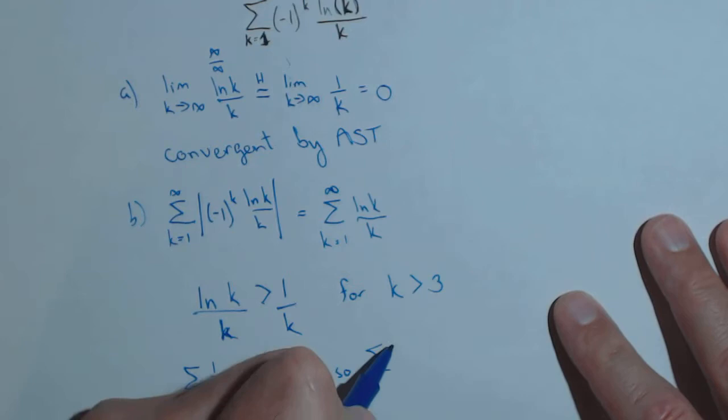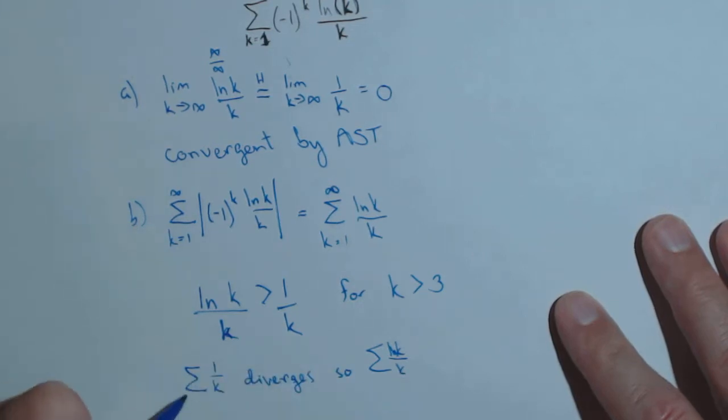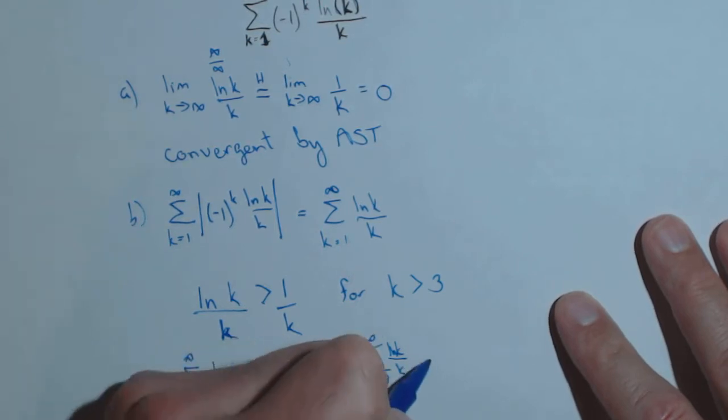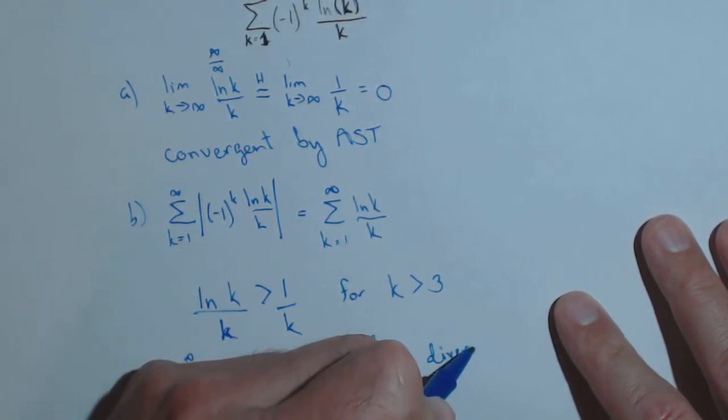So our series ln of k over k, now we're just doing from k equals three to infinity, diverges.